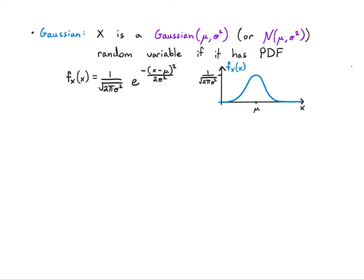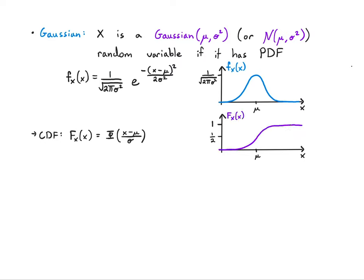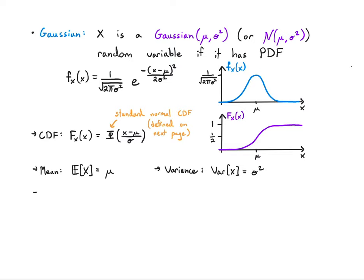The CDF is a bit more complicated — we define it in terms of a function capital Φ. It starts at zero, accelerates around μ, then slows down and creeps toward one, only hitting one at infinity. This Φ is called the standard normal CDF, which we'll define on the next page. The mean is simply μ and the variance is σ². These are nice properties: a Gaussian is fully specified by its mean and variance.